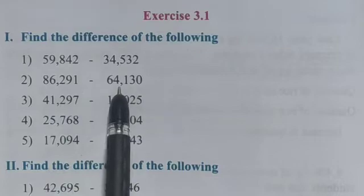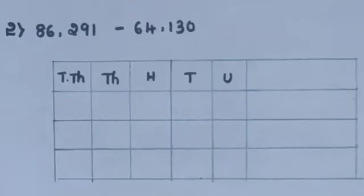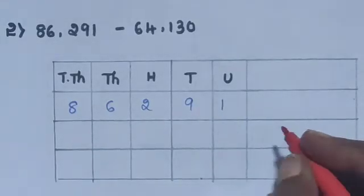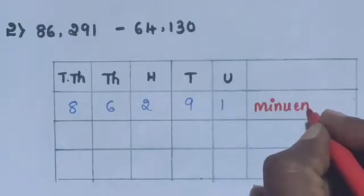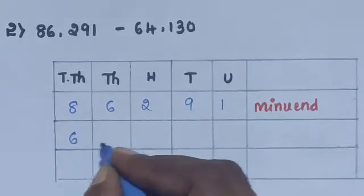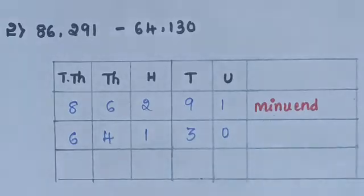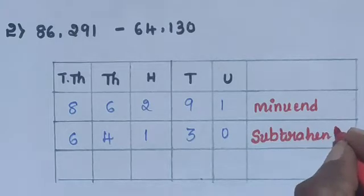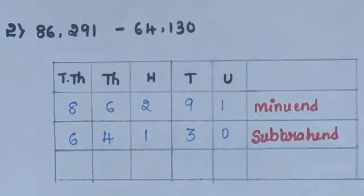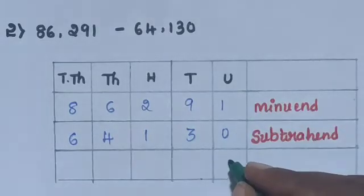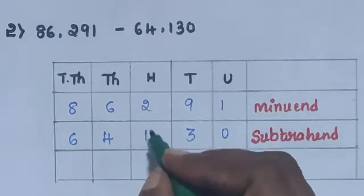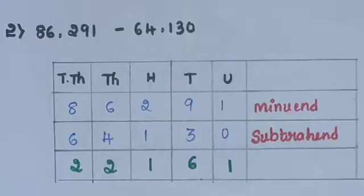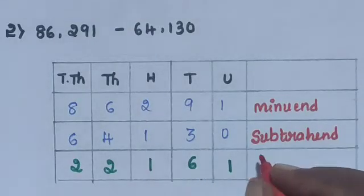86,291 minus 64,130. 86,291 is the larger number — the minuend — and 64,130 is the subtrahend. Find the difference: 1 minus 0 is 1. 9 minus 3 is 6. 2 minus 1 is 1. 6 minus 4 is 2. 8 minus 6 is 2. The difference is 22,161.